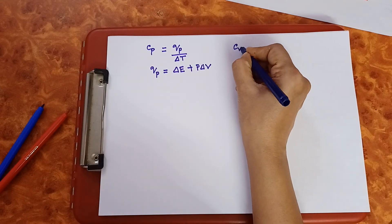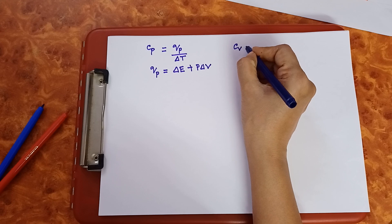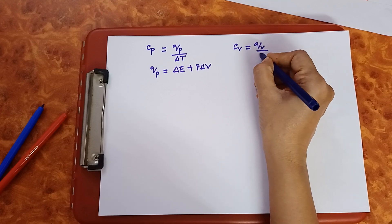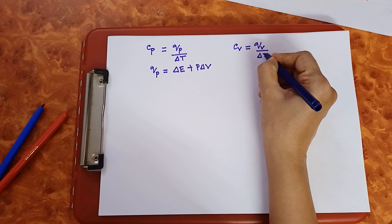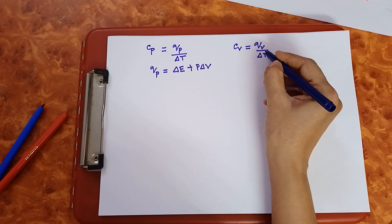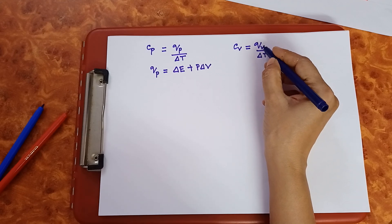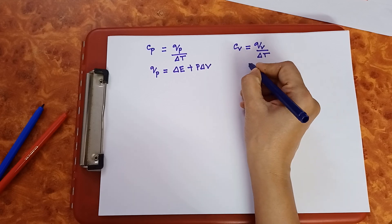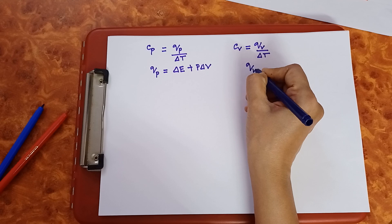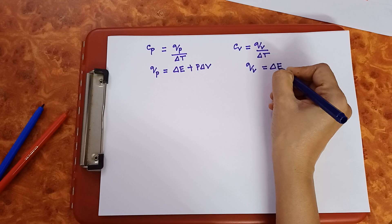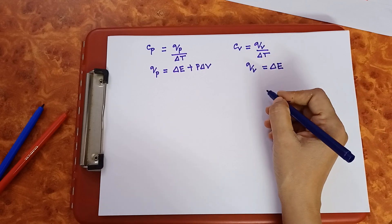Cv is the heat capacity of the gas at constant volume, equal to heat absorbed at constant volume divided by change in temperature. When the volume is constant there is no question of pressure-volume work, so heat absorbed at constant volume goes entirely to increase the internal energy of the system.